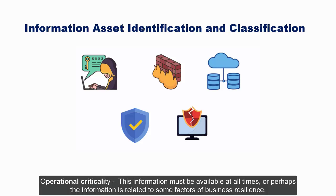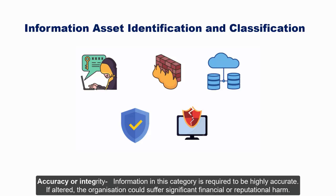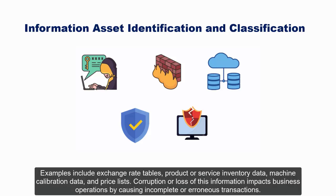Operational Criticality refers to information that must be available at all times, or that relates to business resilience. Examples include virtual server images, incident response procedures, and business continuity procedures. Corruption or loss of this information may significantly impact ongoing business operations. Accuracy or Integrity refers to information required to be highly accurate — examples include exchange rate tables, product or service inventory data, machine calibration data, and price lists. Corruption impacts business operations by causing incomplete or erroneous transactions.